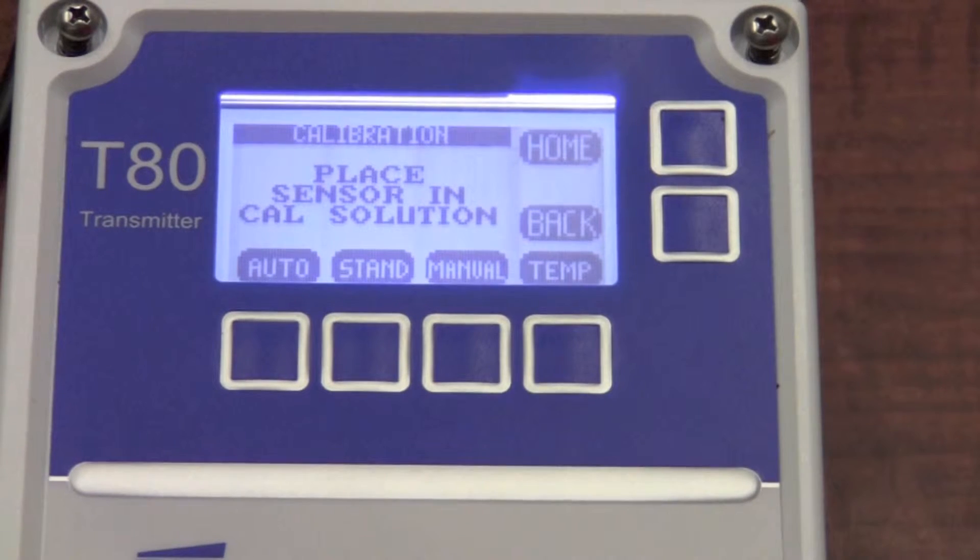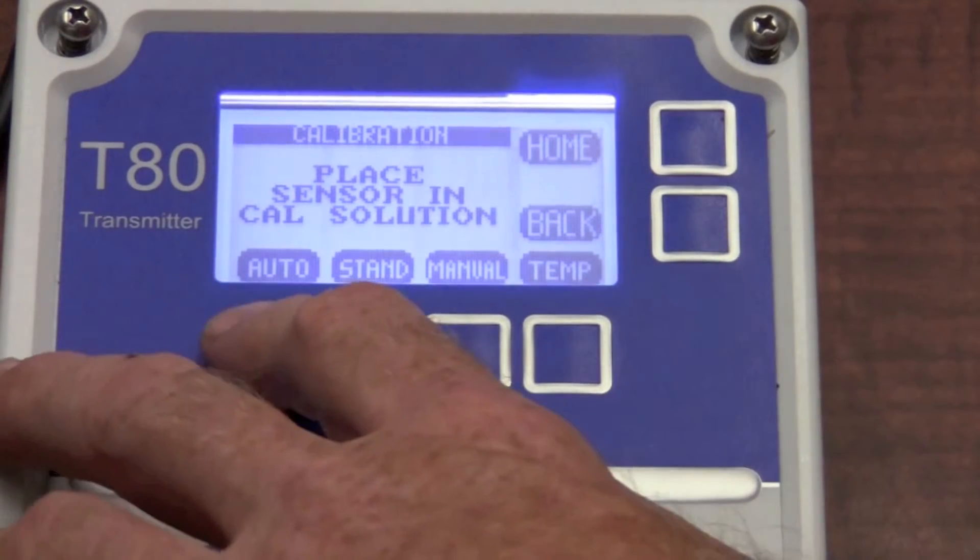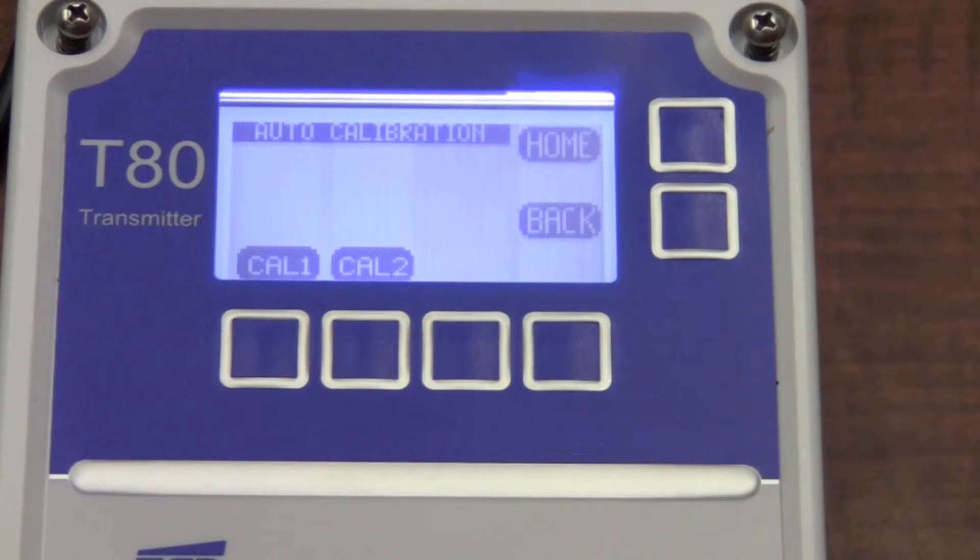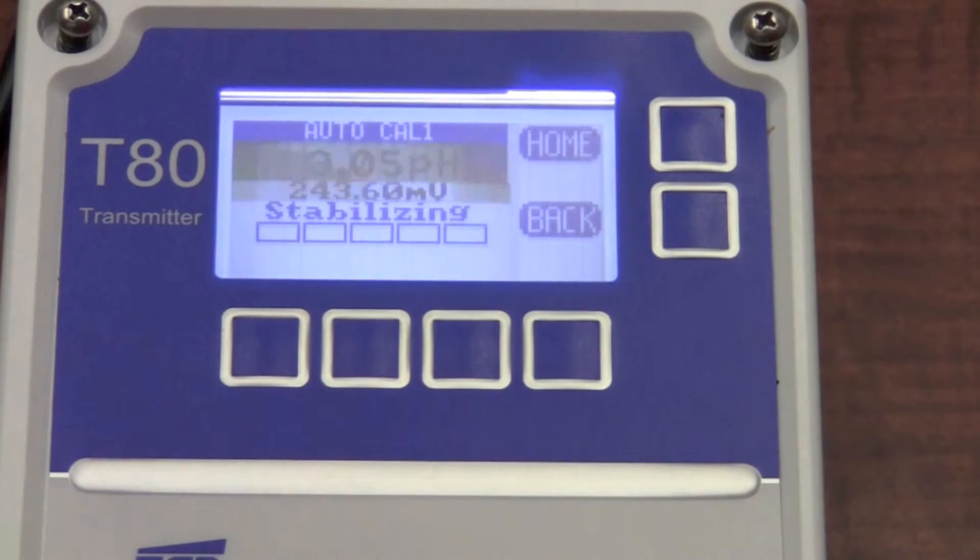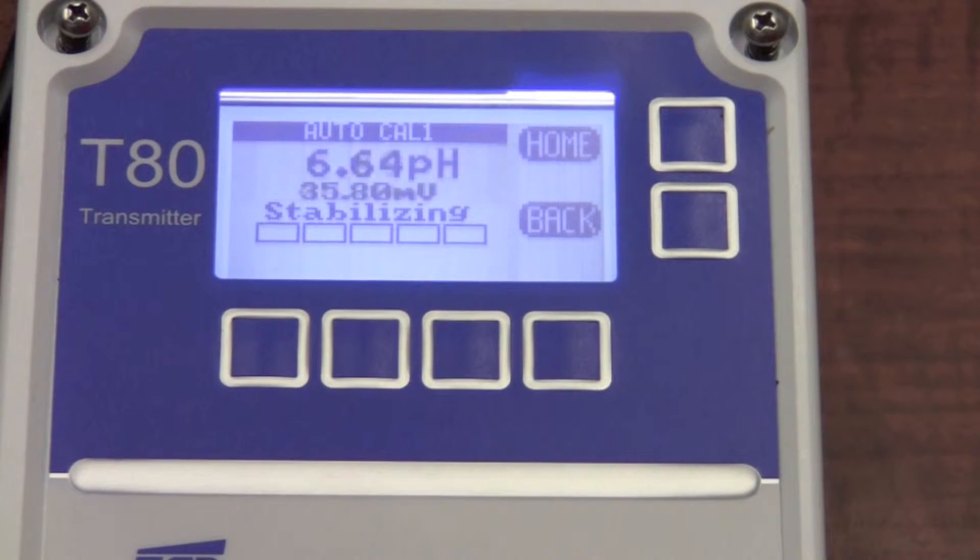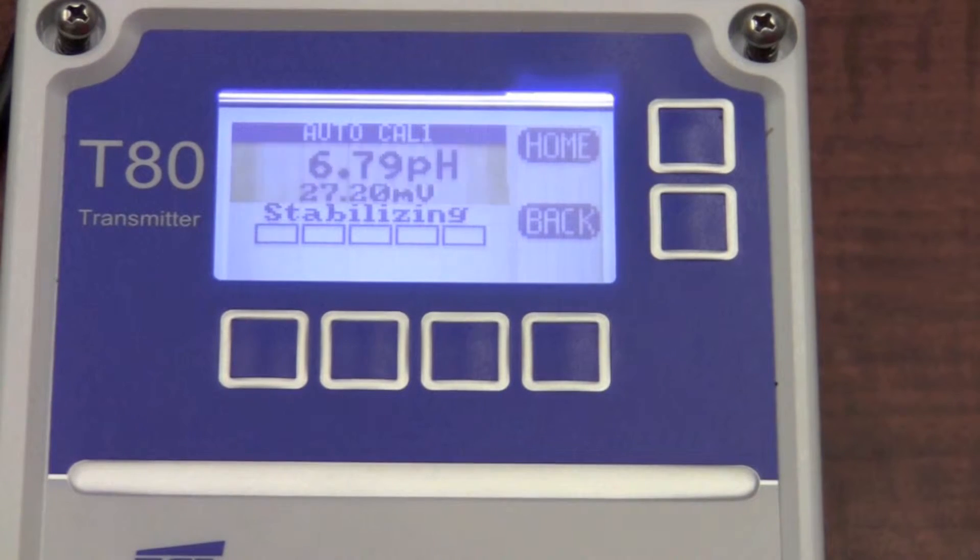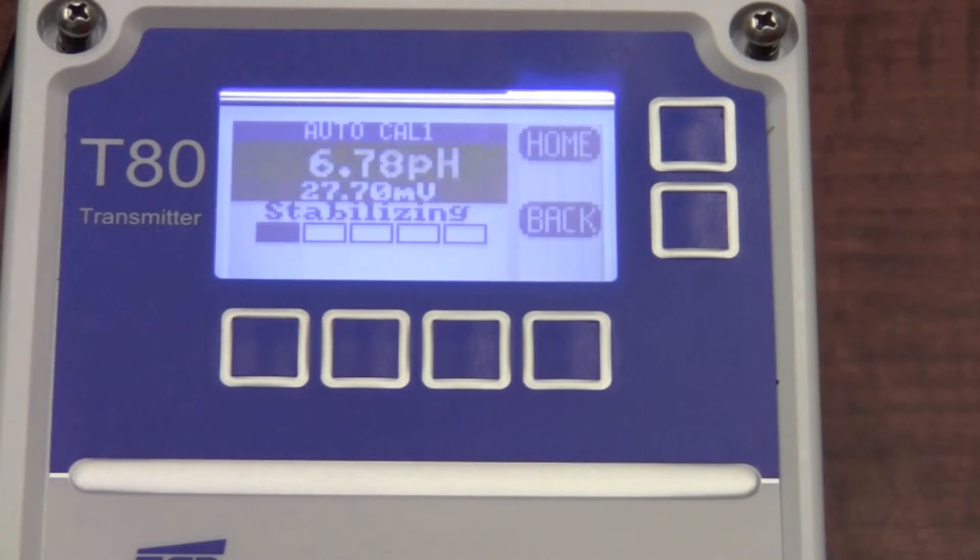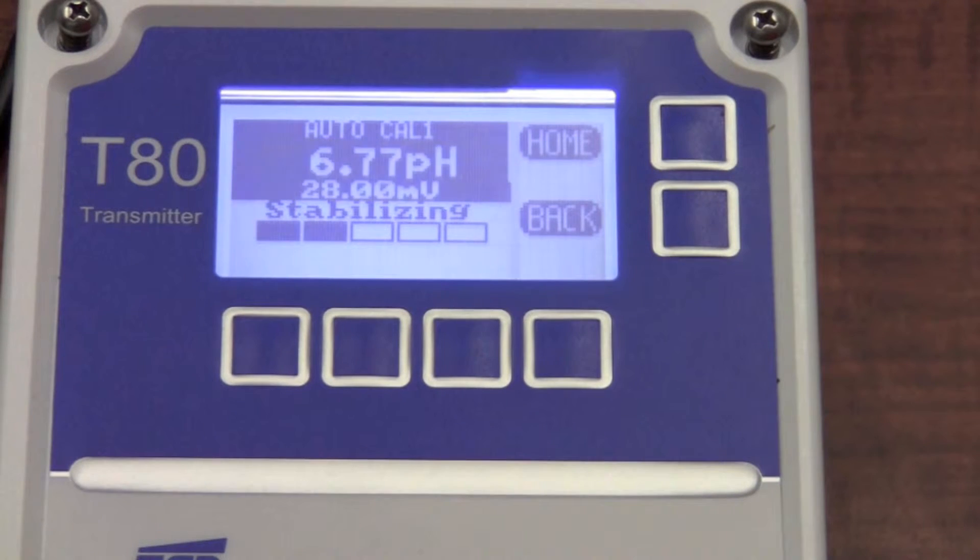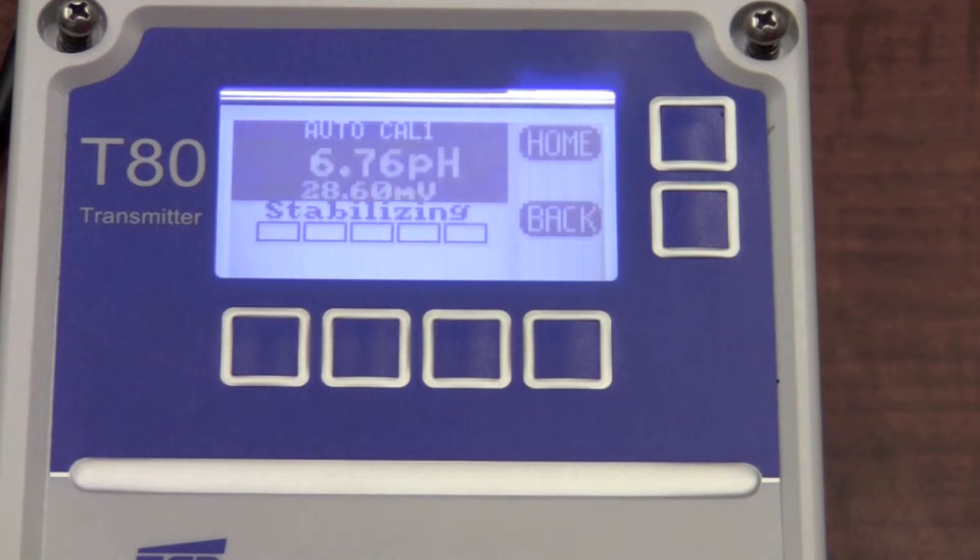The T80 simply asked me to place the sensor in one of my calibration solutions. I'm placing that in seven buffer. As you can see, the T80 starts to interrogate the transmitter, reading the millivolt value coming off of the pH electrode. It's going to wait for stabilization, and once it's satisfied that it is stable, the T80 thinks it's as close to one of the standard calibration solutions of seven.